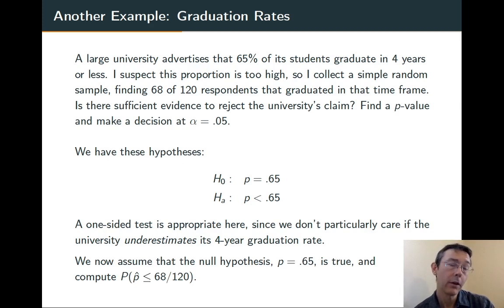We're now going to assume that the null hypothesis is true, that the population proportion really is 0.65, and compute the probability of getting a result at least as extreme as the one we got just by random chance.